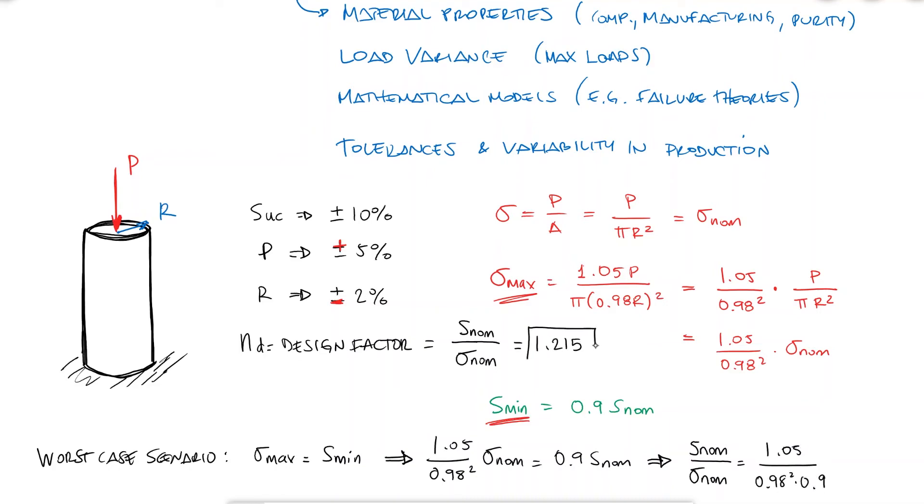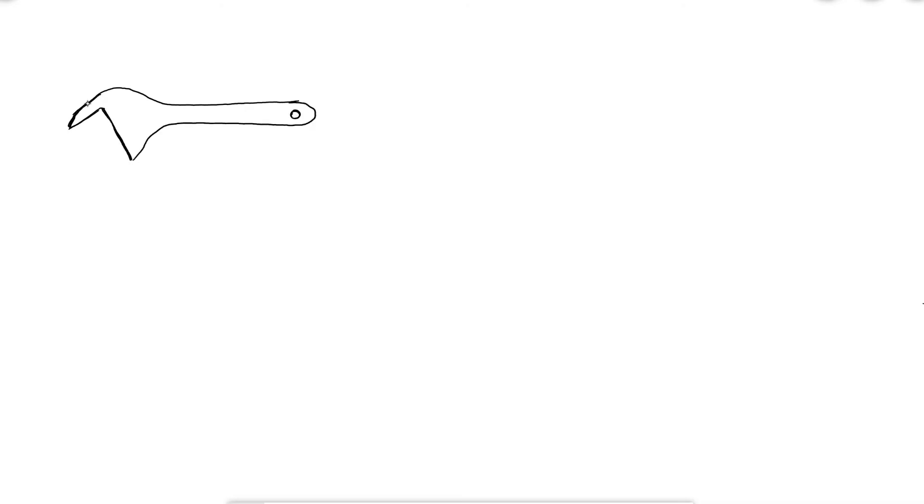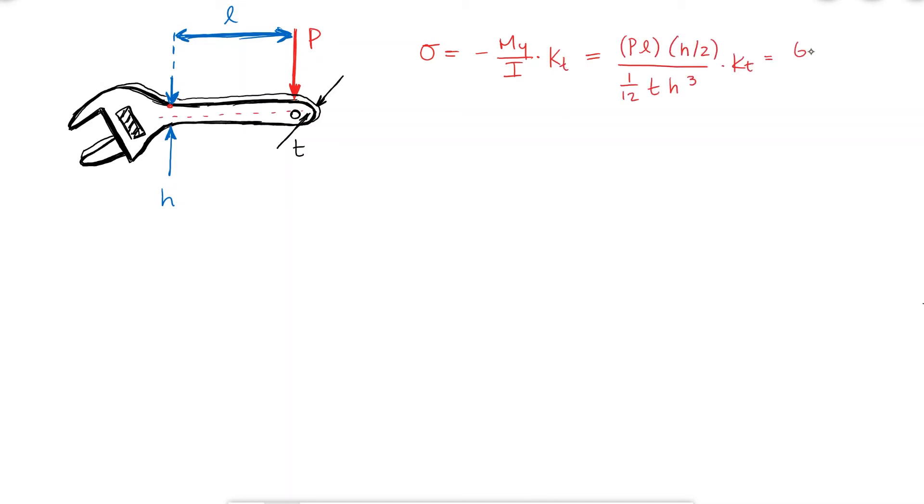Let's take a look at another example, where I have a wrench that is subjected to a load of P, and I'm interested in calculating the stress inside the handle where the cross section area is lowest. I know that the handle is long enough for the transverse shear stress to be negligible, and therefore the maximum stress will be the normal stress from bending. The moment is negative PL, that cancels out with the negative sign. The distance from the neutral axis to the top is H over 2, and the second moment of area for a rectangular cross section is 1 over 12 base times height cubed. And due to the change of cross section area at that point, I'm considering a stress concentration factor, KT.